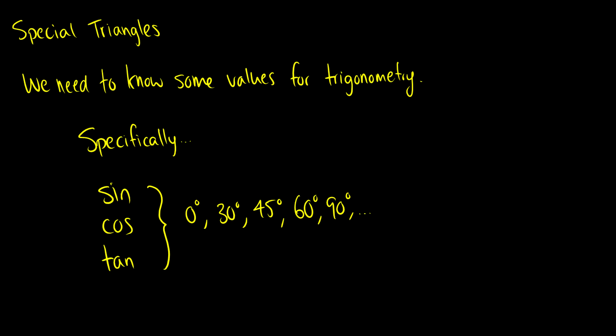Welcome to the most important lesson in all of trig in grade 11 — special triangles. Why do we need these special triangles? There are some certain values for trig that we need to know: specifically, the sine, cosine, tangent, secant, cosecant, and cotangent of 0°, 30°, 45°, 60°, 90°, and every other degree following this pattern — increments of 30° and 45°. You'll understand why the further you go in mathematics, but for now just realize that these are important and really nice to work with.